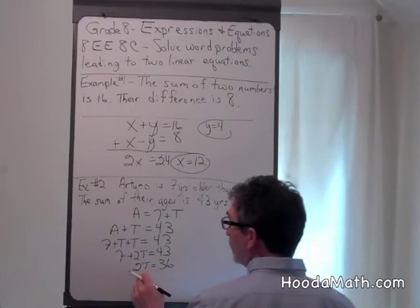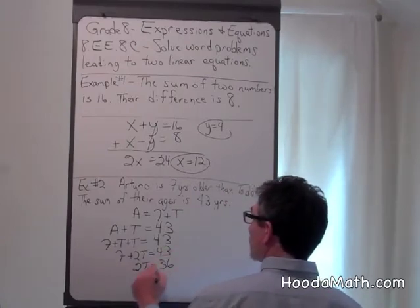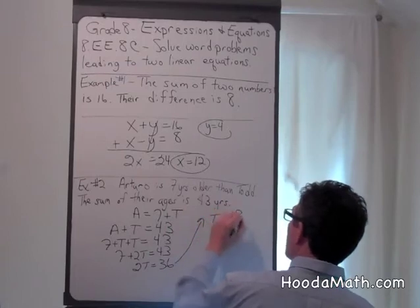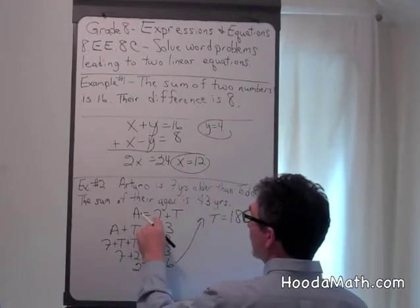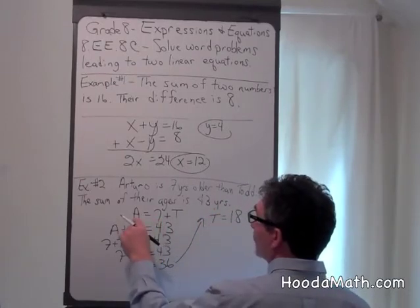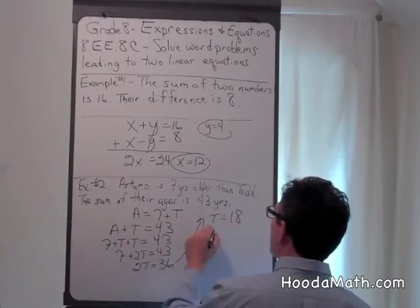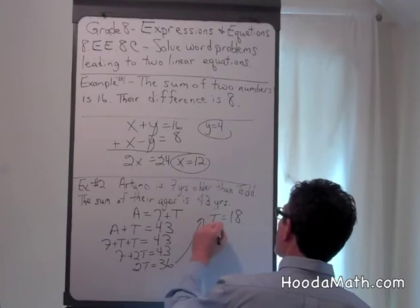Divide both sides by 2. Bringing it up here, t equals 18. If we substitute back here to find out what Arturo's age is, 7 plus 18 equals 25. So a equals 25.